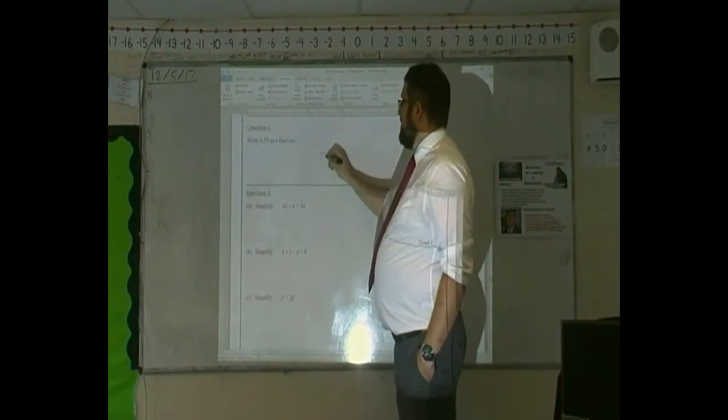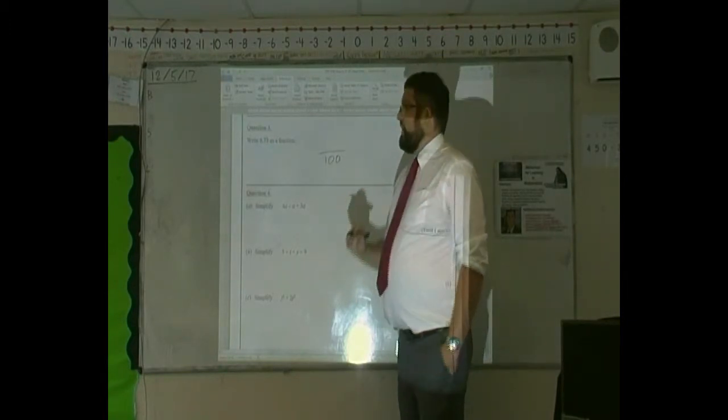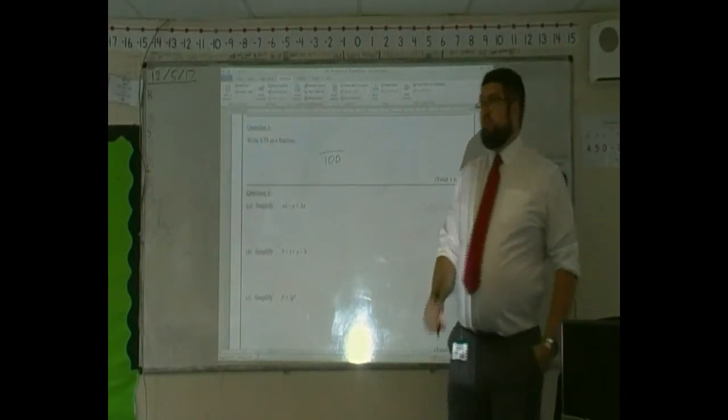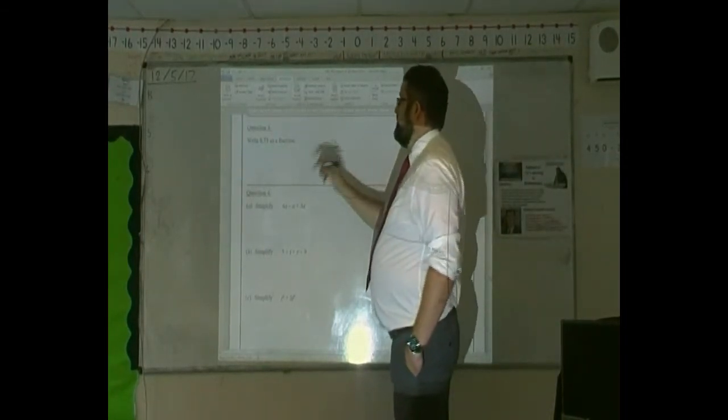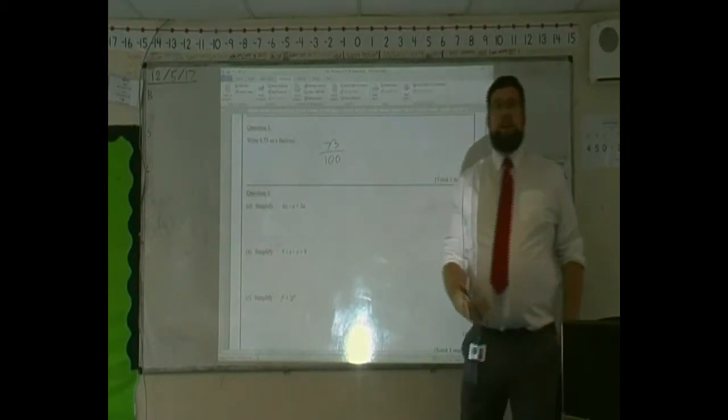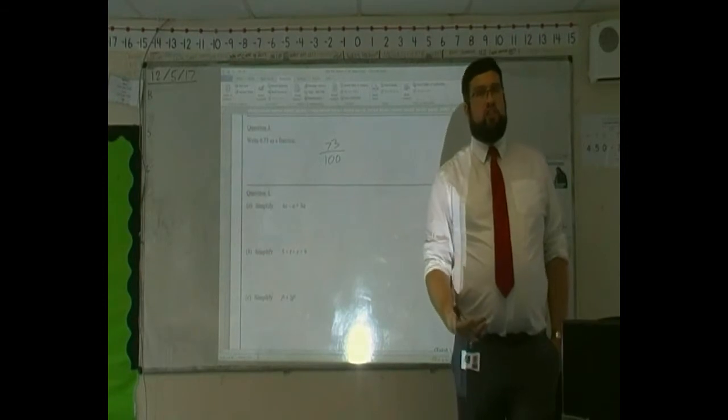So as a fraction, I know my denominator is going to be 100. Now, if we were just concerning the 3, we would write 3, but we've also got the 7 before it, because actually we have 73 hundredths.